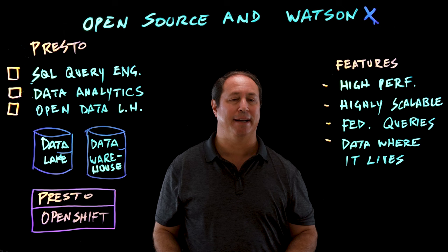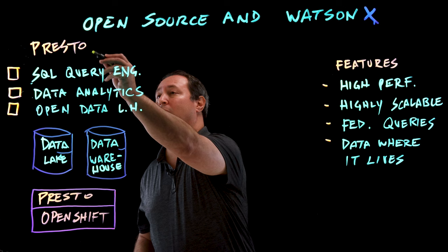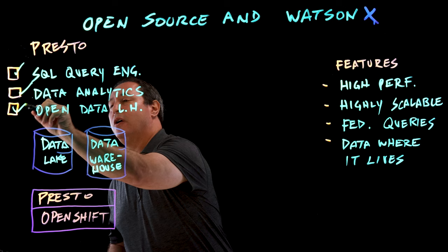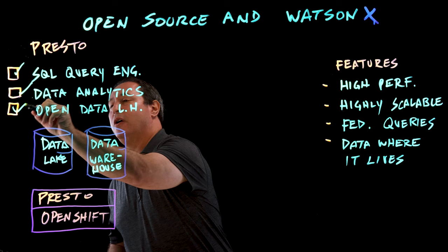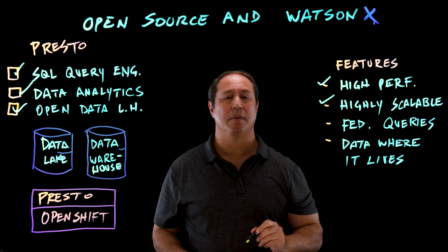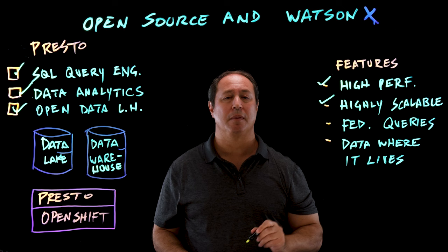Now let's switch gears and look at data gathering and analytics. The open source project we use for that is Presto. Presto is an SQL query engine used for open data analytics and for the open data lakehouse. Its key features include high performance, high scalability, federated queries, and the ability to query the data where it lives. I hope I've convinced you that WatsonX has continued IBM's long tradition of contributing to and leveraging open source in its offerings. If you'd like to learn more, please check out the links below.